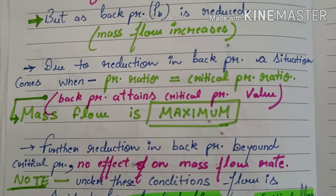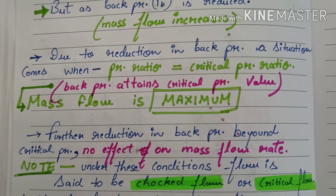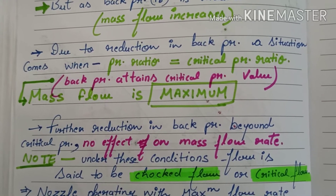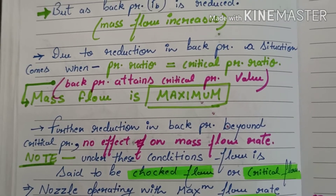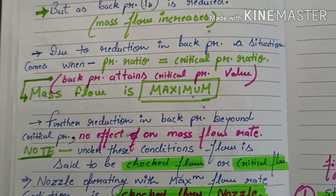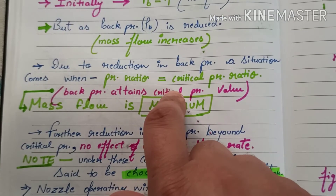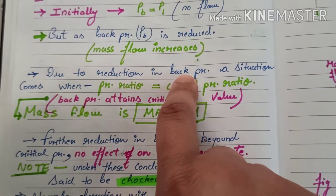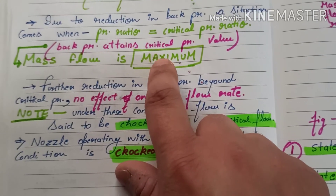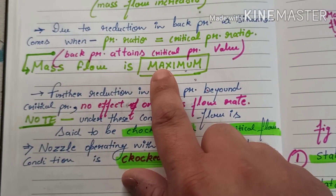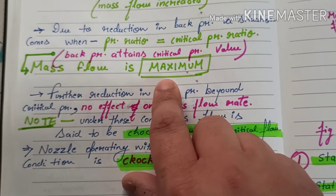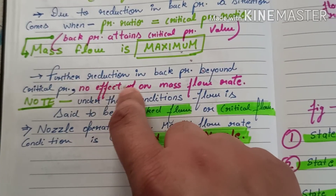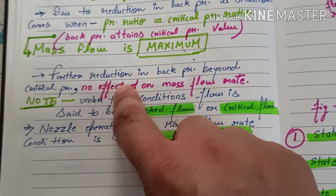Due to reduction in back pressure, a situation comes when the pressure ratio equals the critical pressure ratio and the mass flow rate is maximum. If we keep reducing the back pressure further, the mass flow rate will be at its maximum and any further reduction in back pressure will have no effect on the mass flow rate.